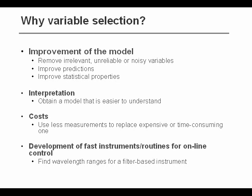It can also be helpful to do variable selection in order to make the interpretation of the model easier. In some situations, we might need to do variable selection because we cannot afford to measure all the original variables, but we want to see which variables we should retain to still have a good model, but a model that we can measure more cheaply. That's useful, for example, when we want to make fast instruments or routine analysis, maybe for use in an online or inline control of a product or a process.